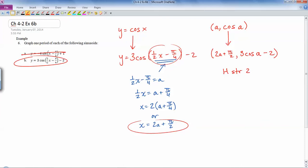So horizontal shift right π/2 units, and then for vertical we've got a vertical stretch by 3, and then a vertical shift down 2.